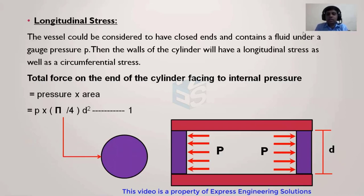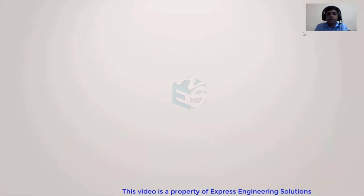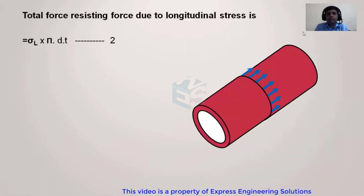That pull or stress is nothing but the longitudinal stress. For longitudinal stress to be generated, the vessel must be closed. The cause is the internal pressure, which generates a splitting force equal to pressure multiplied by the cross-sectional area — shown in purple — which is π/4 × d². This gives us equation one: the splitting force = P × (π/4 × d²).